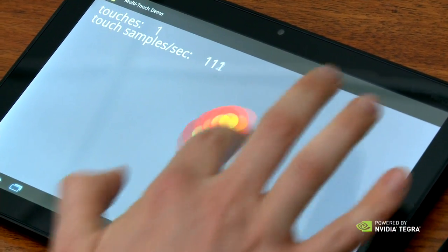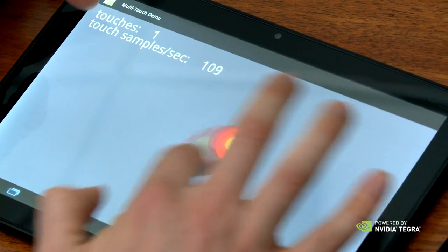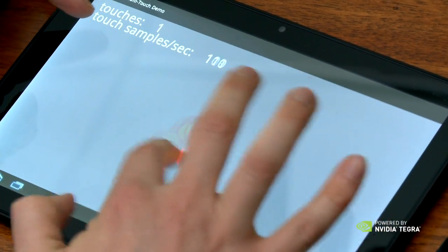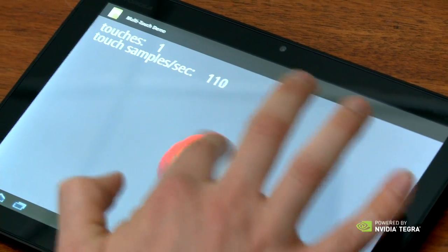What I'm going to show you at first is really just a single touch. So you can see a single touch event, one touch, and the number we're really going to be looking at is the number of touch samples per second.